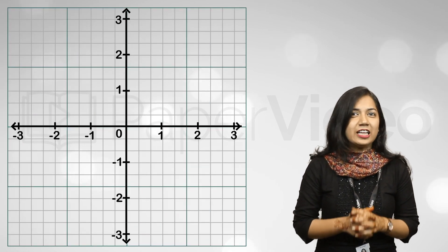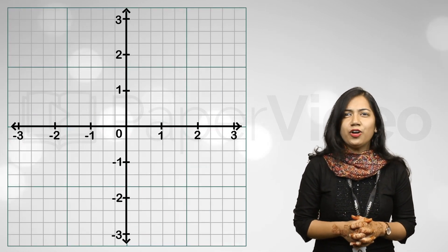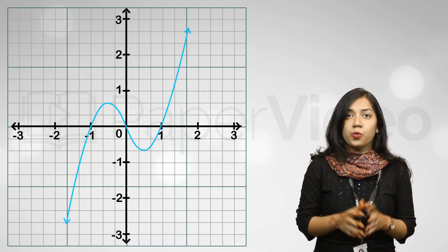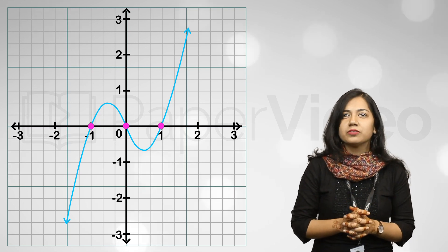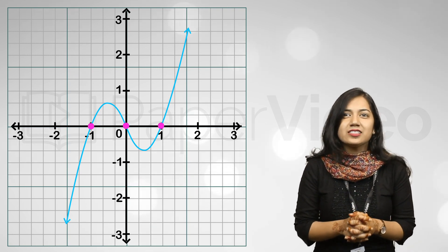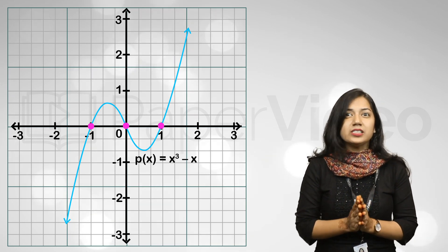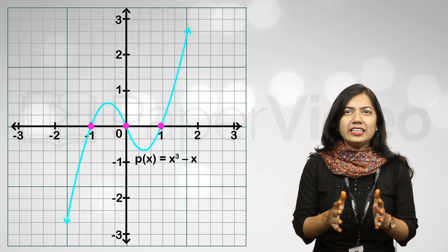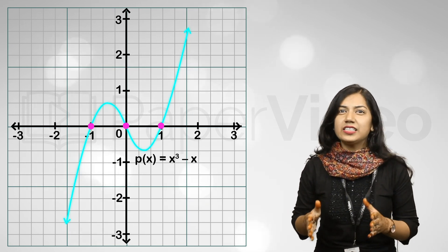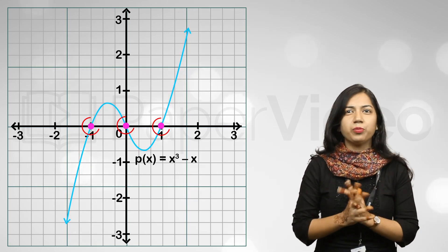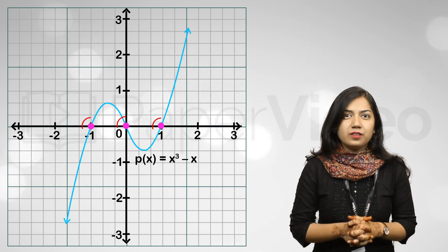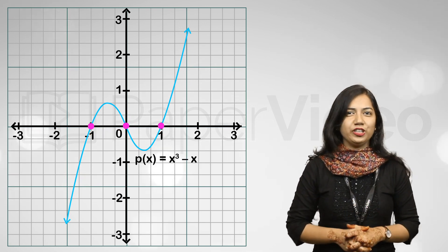Let us now understand the graph of a cubic polynomial. A cubic polynomial has degree 3. This means that the graph of a cubic polynomial will look like this, which intersects the x-axis three times. For instance, this is a graph of cubic polynomial p(x) = x³ − x. Clearly, we can see that this intersects the x-axis at three points. Such type of graphs are the general graph of a cubic polynomial.